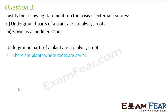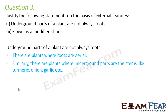There are plants where roots are aerial, and similarly there are plants where the underground parts are stems — for example, turmeric, onion, garlic, etc. In all these cases we have underground stems. We have in fact spoken about so many different modifications of underground stems like rhizomes, tubers, corm, and bulb. Leaves also get modified into scales, like potato, which are also underground.